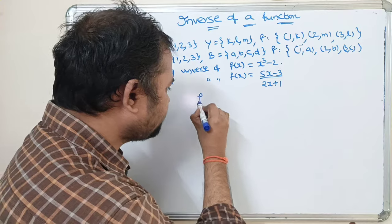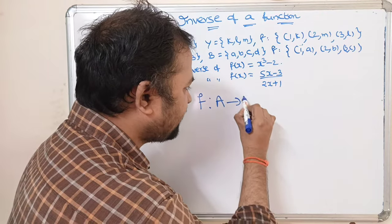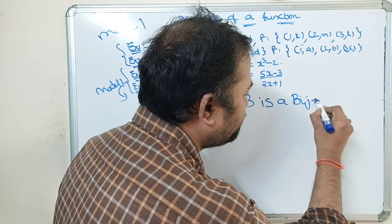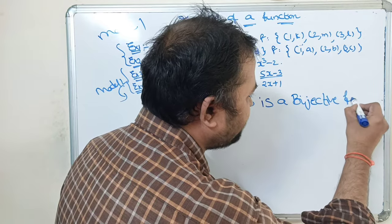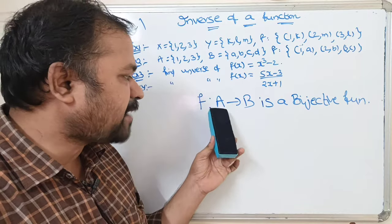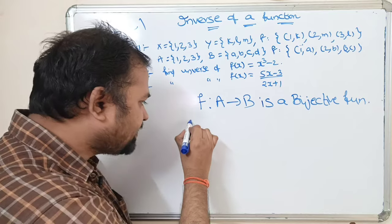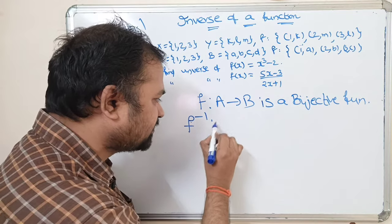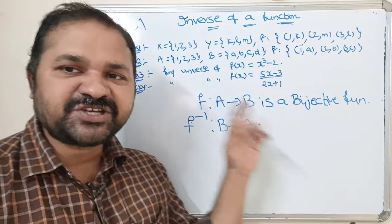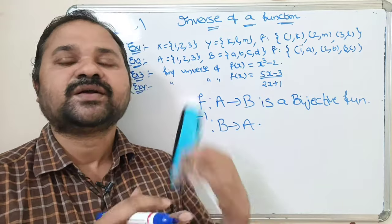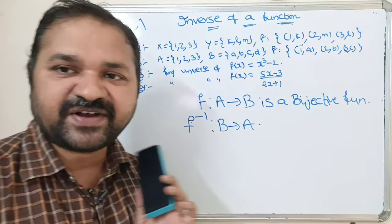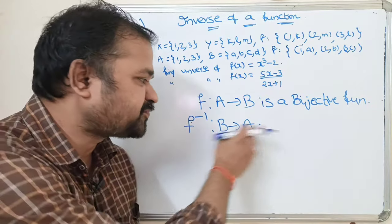Let we have a function f which maps from set A to set B, and it is a bijective function. We can calculate the inverse of a function only when it is a bijective function — that means it should be one-to-one and onto. Then we can denote the inverse with f inverse, which maps from B to A.